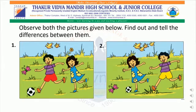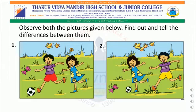I am sure you all must have observed the differences in both the pictures. So now, let's begin. First, let us count the birds. We can see two birds in the first picture, and in the second picture, we can see four birds. In the first picture, we can see one flower. But in the second picture, the flower is not to be seen.